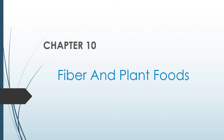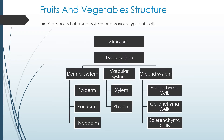Today we begin a new chapter on fiber and plant roots. Fruits and vegetables have a structure composed of a tissue system and various types of cells.